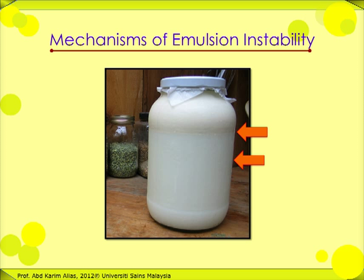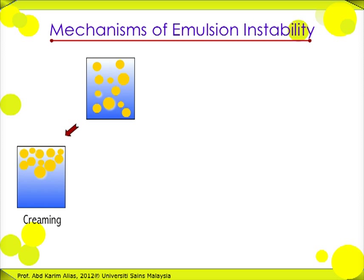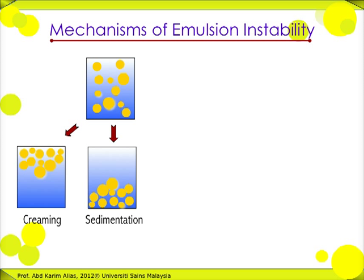Let's start by looking at creaming and sedimentation. This process results from external forces, usually gravitational or centrifugal. When such forces exceed the thermal or Brownian motion of the droplets, a concentration gradient builds up in the system, such that larger droplets move more rapidly — either to the top if their density is less than that of the medium, or to the bottom if their density is greater.